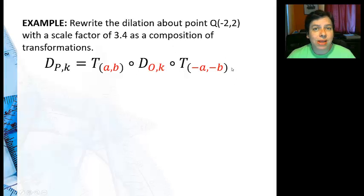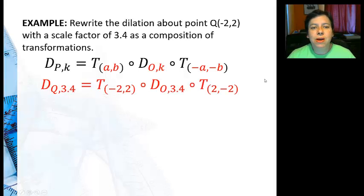So I'm going to say dilation around point P with scale factor k, and this is what we're using from what we just got. Is, first of all, starting right to left, translation back to the origin from that point, dilation around the origin, and then translate back to the point. So filling in all my numbers, that's pretty much the transformation I will have to do.